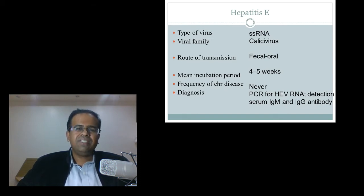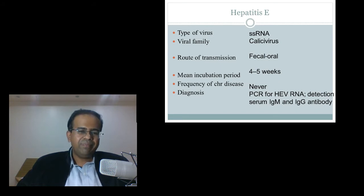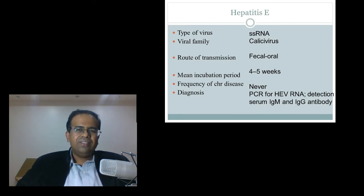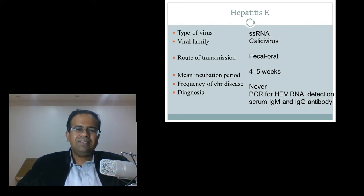The rest — B, C and D — are transmitted parenterally. Incubation period is just 4-5 weeks. Frequency of chronic disease is never. Diagnosis is usually done by IgM or IgG antibody against Hepatitis E virus or by PCR for Hepatitis E virus RNA. This is a relatively indolent disease just like Hepatitis A, but it poses special risk if it happens in a pregnant woman, because these women are likely to develop fulminant hepatic failure, which can cause mortality. Apart from that, it is a relatively okay virus to have.